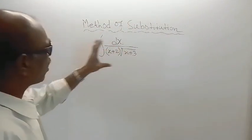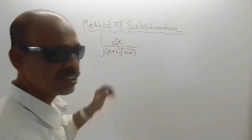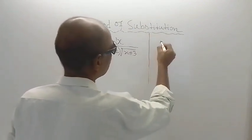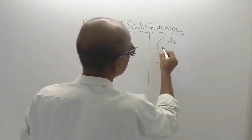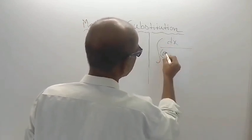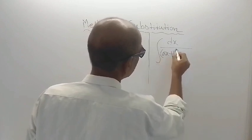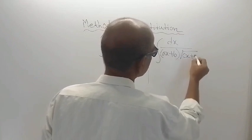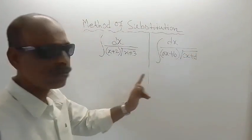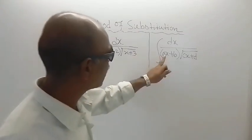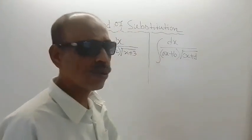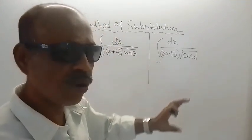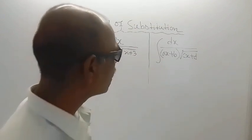If the form of the integration is like this, what is the form of this integration? I am showing here the form is like this: dx divided by (ax + b) into root of (cx + d). This is the form of the integration. Here a, b, c, d all are constants. Only variable is x.